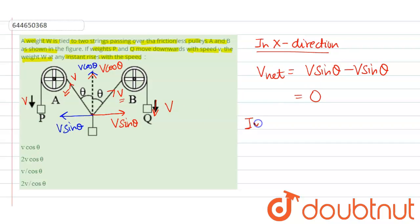And in y direction, the net velocity will be v cos theta. That means the net velocity in y direction, or you can say the speed, will be 2v cos theta in upward direction.